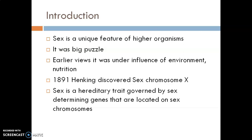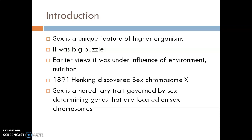The discovery of sex chromosomes by von Henking in 1891 in the insect Pyrochorus apteris enabled McClung, Stevens, Wilson, and Bridges to establish that sex is a hereditary trait governed by sex-determining genes located in sex chromosomes. It also became clear that since sex is a genetically controlled trait, it follows Mendelian inheritance — undergoing segregation, independent assortment, and recombination.